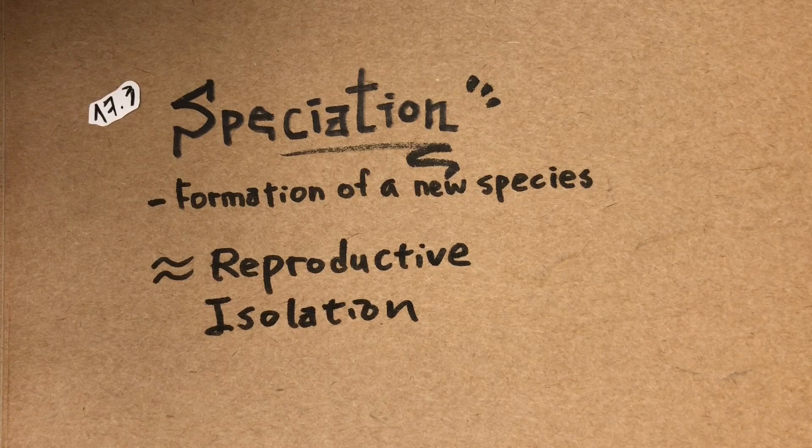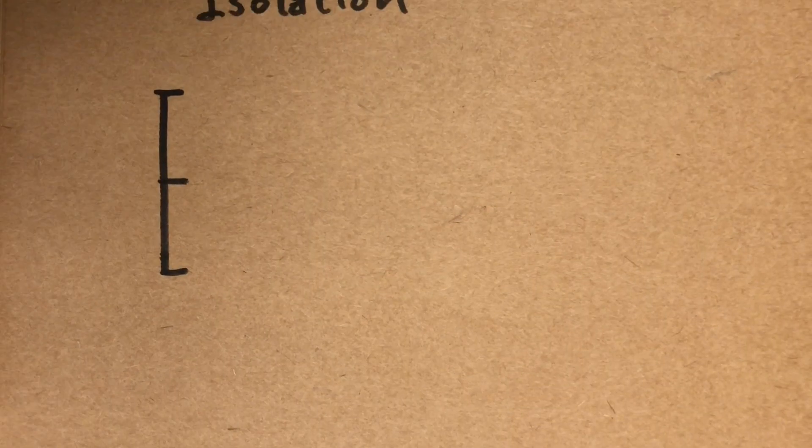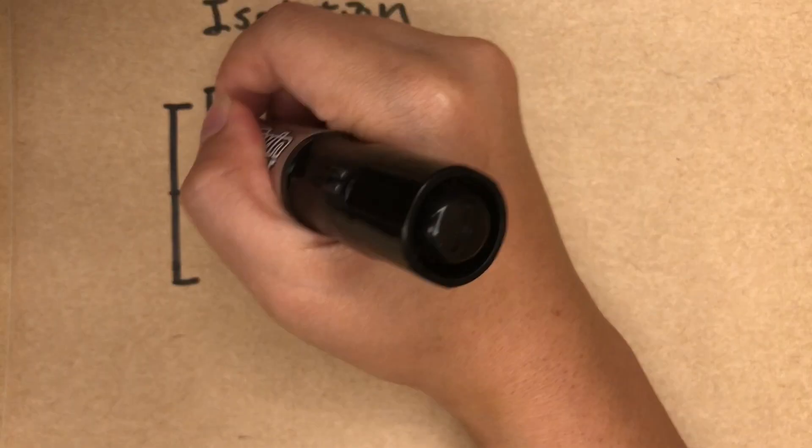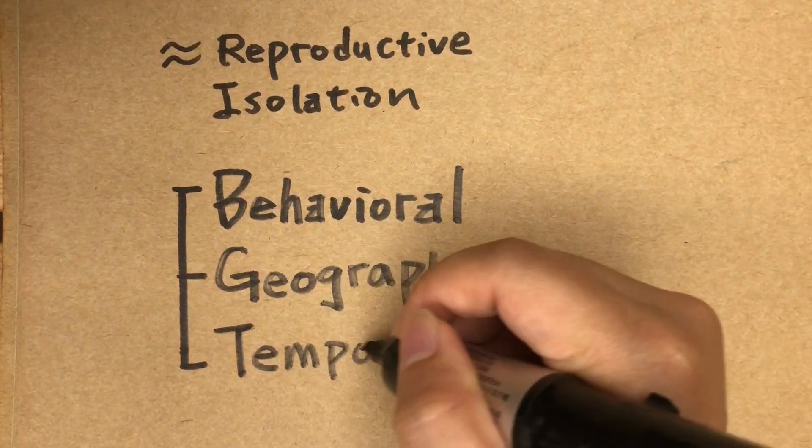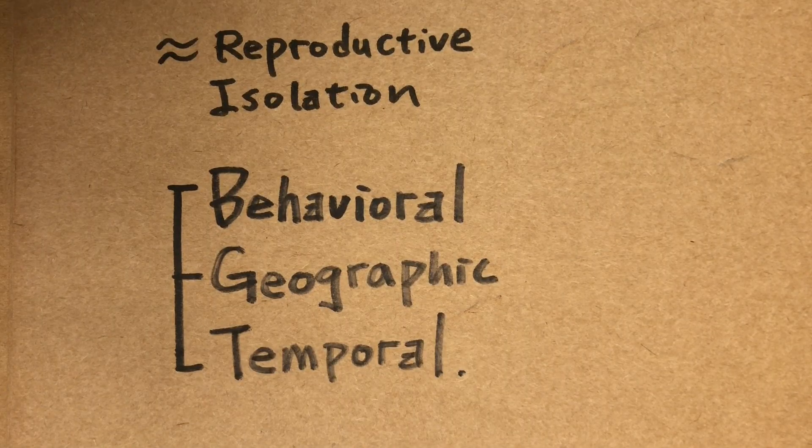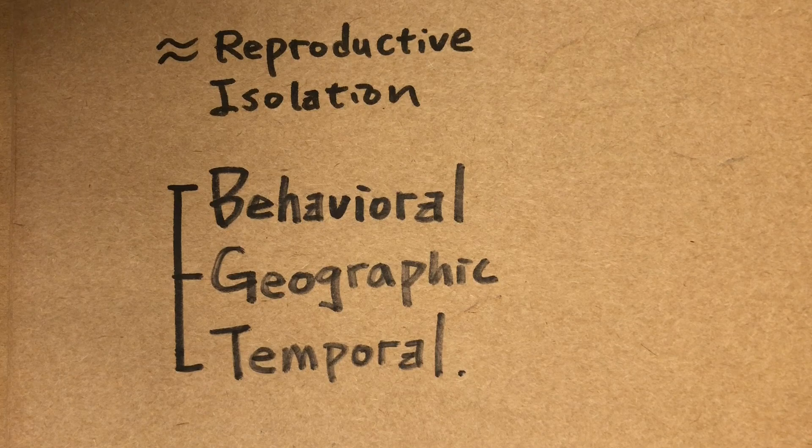Reproductive isolation is kinda the same thing, but you know, being cool is all about using fancy phrases. So here we have three more fancy phrases for you: behavioral isolation, geographic isolation, and temporal isolation, which are three possible causes for speciation.